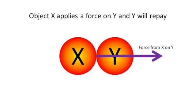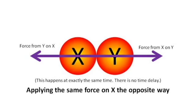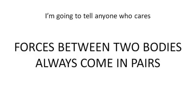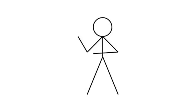Object X applies a force on Y, and Y will be applying the same force on X in the opposite way. I am going to tell anyone who cares, forces between two bodies always come in pairs.